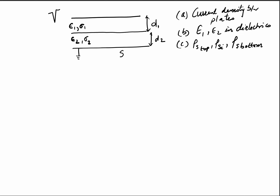Since the dielectric is lossy — meaning it has finite conductivity — we can imagine there will be a current flow or current density present. According to the symmetry of the problem, since the voltage is applied between the plates, we expect the current density will flow in the direction normal to the plates. From the boundary conditions, we know that J₁ₙ = J₂ₙ — that is, the normal component of the current density is continuous. According to the geometry, for the given problem, J₁ₙ = J₂ₙ = J.